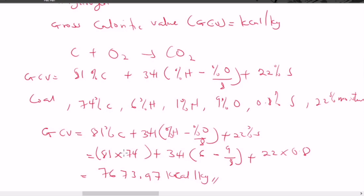You do not need to convert percentages to decimals; just substitute the percentage values directly. So it is 81 times the percentage of carbon, plus 341 times (percentage of hydrogen minus percentage of oxygen over 8), plus 22 times the percentage of sulfur. Nitrogen and moisture are not part of the gross calorific value formula.